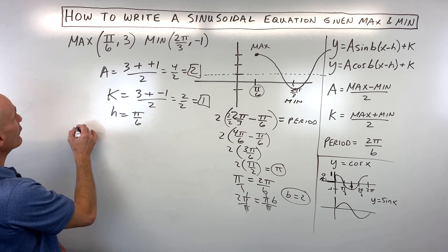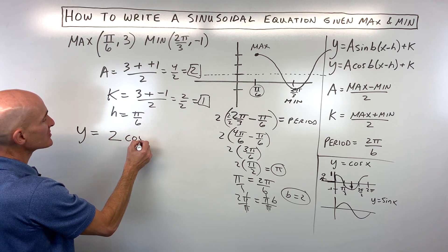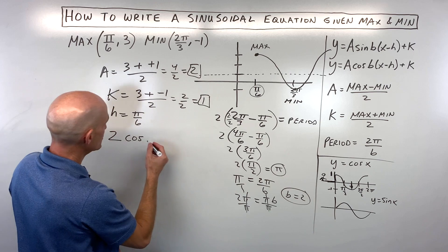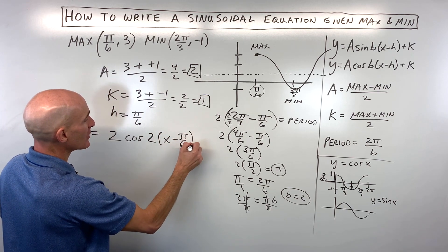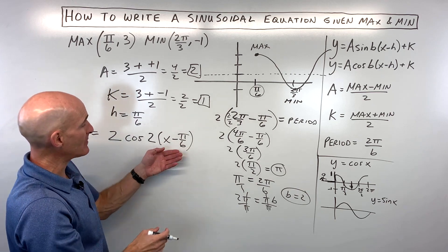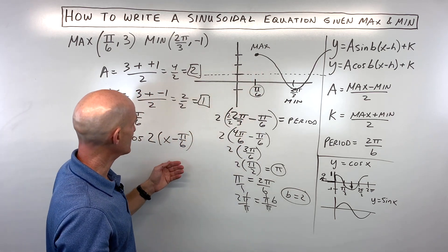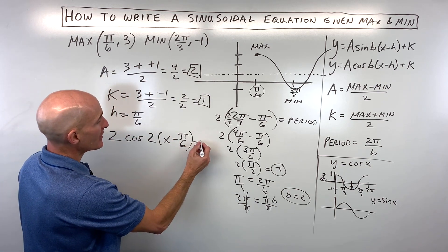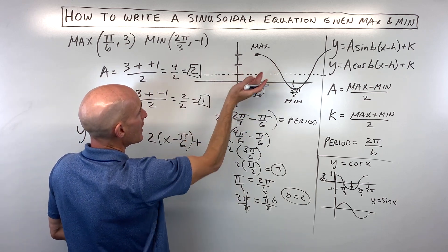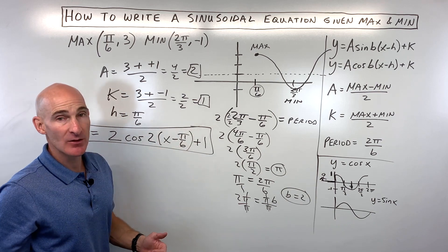And what do we have? We have y equals our amplitude, which is 2, cosine, our b value, which is 2, x minus pi over 6. Now remember, whatever is grouped with the x has the opposite effect. So minus pi over 6 is actually shifting at right pi over 6. If this was plus pi over 6, it would be shifting at left pi over 6. And then our k value, we said it was shifting up one. So this is our sinusoidal equation, given the max and the min.